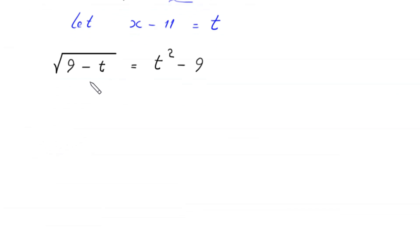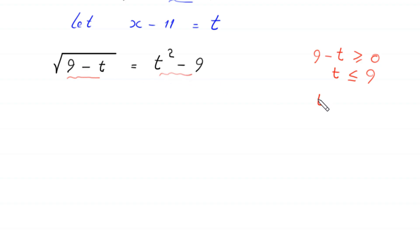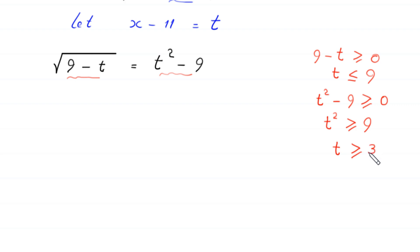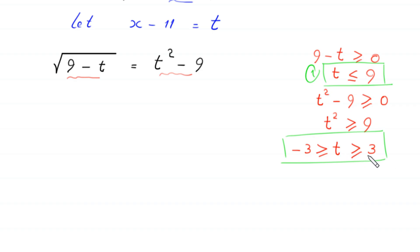We define the domain. Since (9 minus t) is under the square root, we need 9 minus t ≥ 0, meaning t ≤ 9. Since the left-hand side is non-negative, t squared minus 9 ≥ 0, so t squared ≥ 9, meaning t ≥ 3 or t ≤ negative 3. The domain conditions are: t ≤ 9, and (t ≥ 3 or t ≤ negative 3).